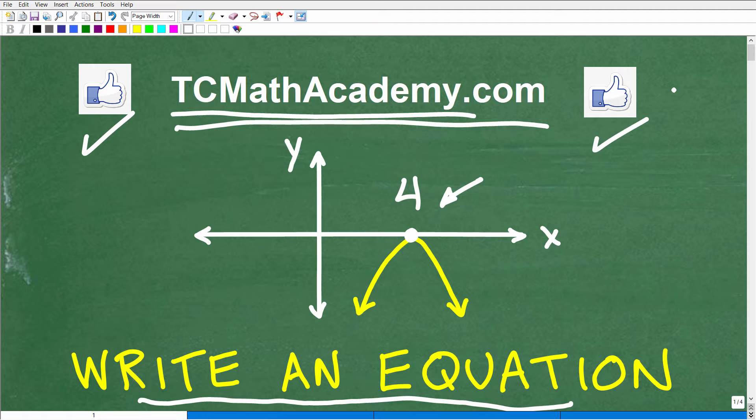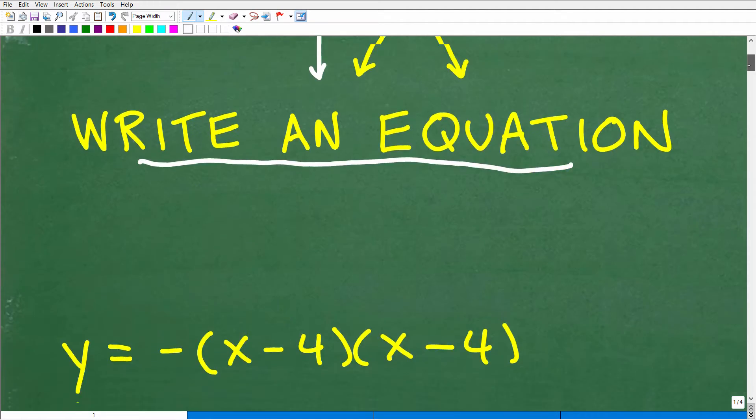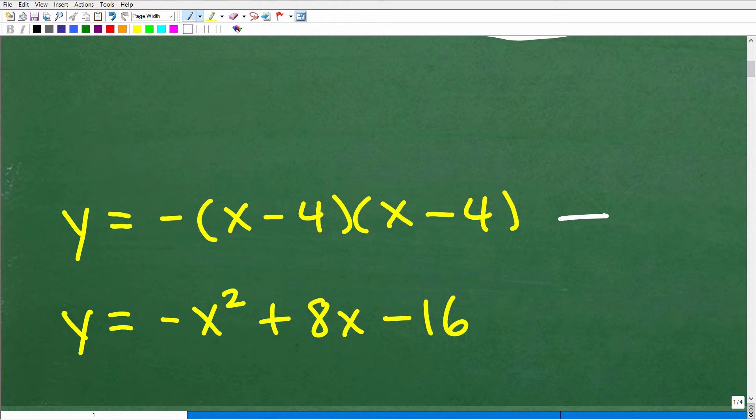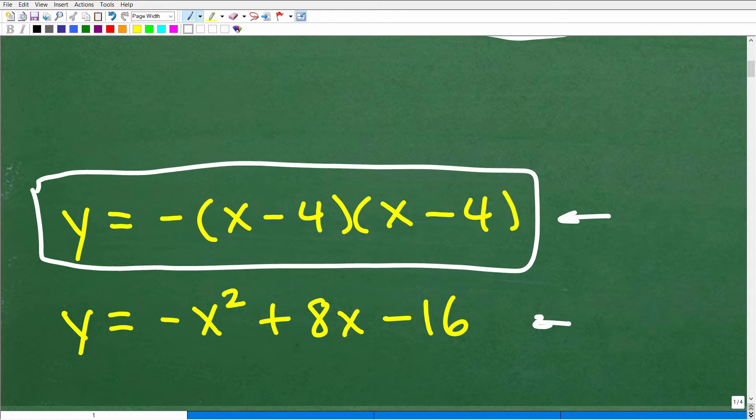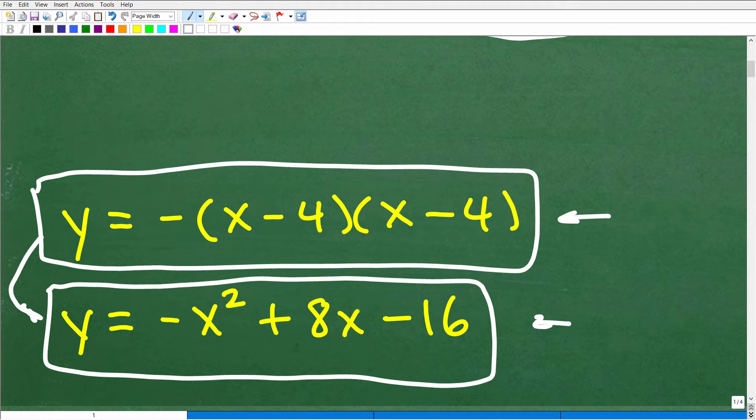Okay, so again, there's not any one answer here, but the easiest answer to get in this particular scenario would be this. These would be two answers, and they are equivalent. If you gave me this equation right here, y equals negative x minus 4 times x minus 4, and if you expanded this, did this multiplication, you would get this equation here. I, myself, as a math teacher, would accept both of these as correct.